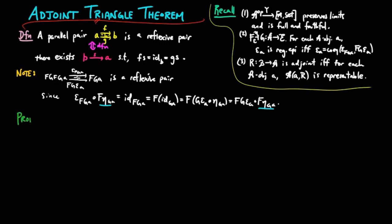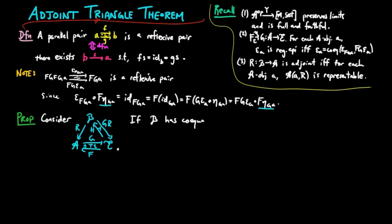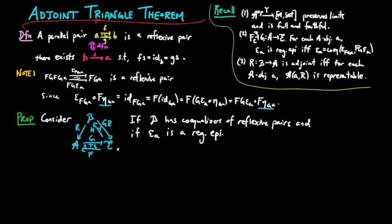And so we see that f eta ga is a common section for this parallel pair of morphisms. Then the adjoint triangle theorem is as follows. Consider the following triangle where we have adjoint situations f, g and h, g, r. Then if the category b has co-equalizers of reflexive pairs, and if epsilon a is a regular epimorphism for each object a, then r is an adjoint functor.